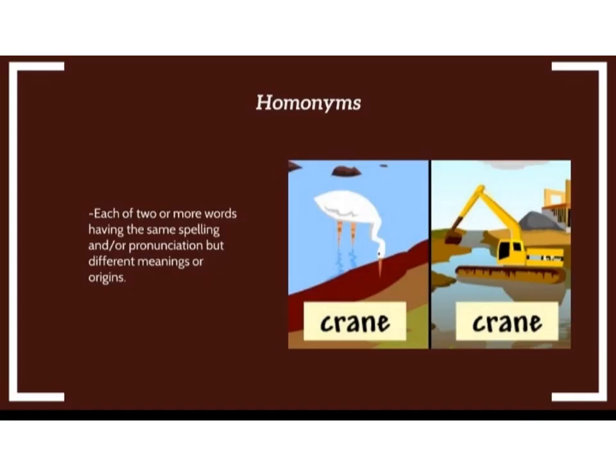The definition of homonyms is: each of two or more words having the same spelling and/or pronunciation but different meanings or origins. For example, crane and crane — the first crane indicates the bird, and the second crane is a kind of vehicle.